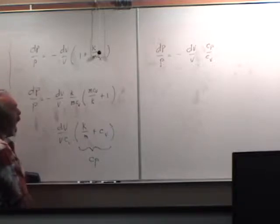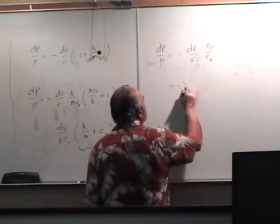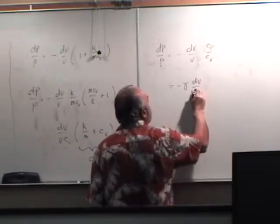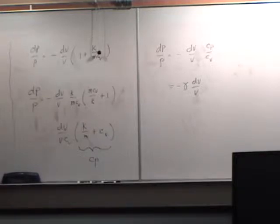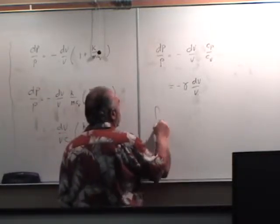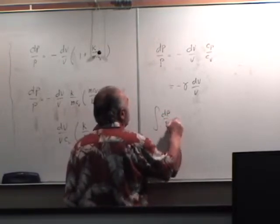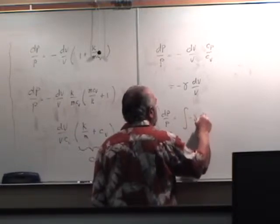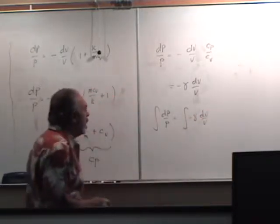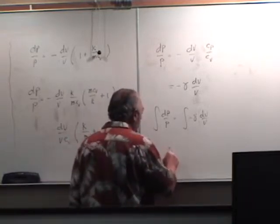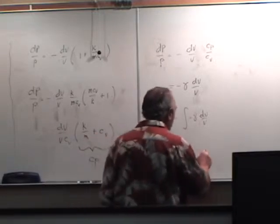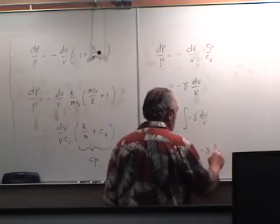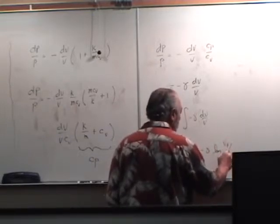So, now, aha, that's nothing more than minus gamma dV over V. We finally have come around to an expression which will be helpful. If I integrate both sides, what do I get? I get the integral of dP over P equals the integral of minus gamma dV over V. But gamma is a constant. So we get LN of P final over P initial equals minus gamma times the LN of V final over V initial.